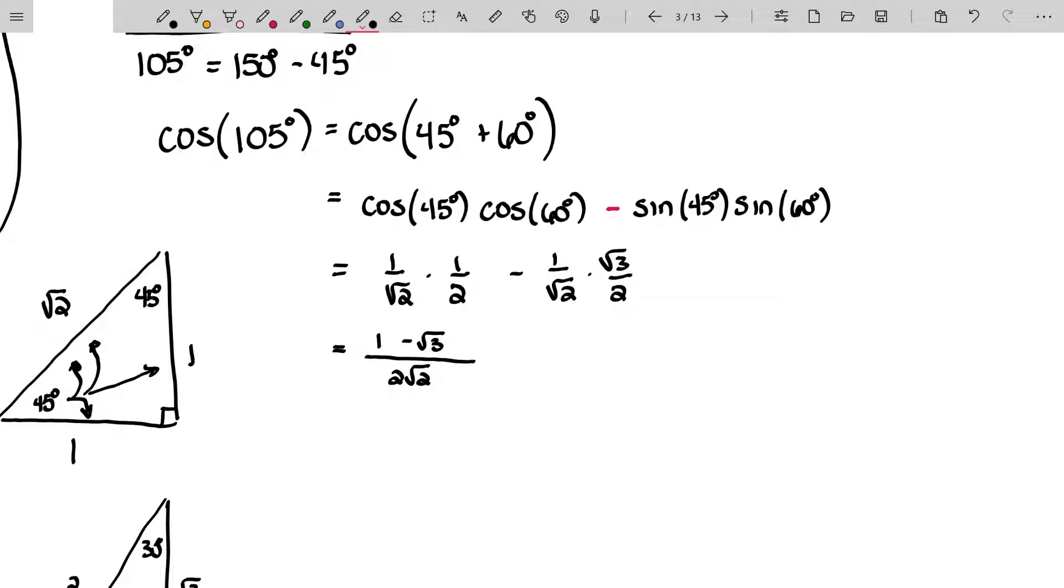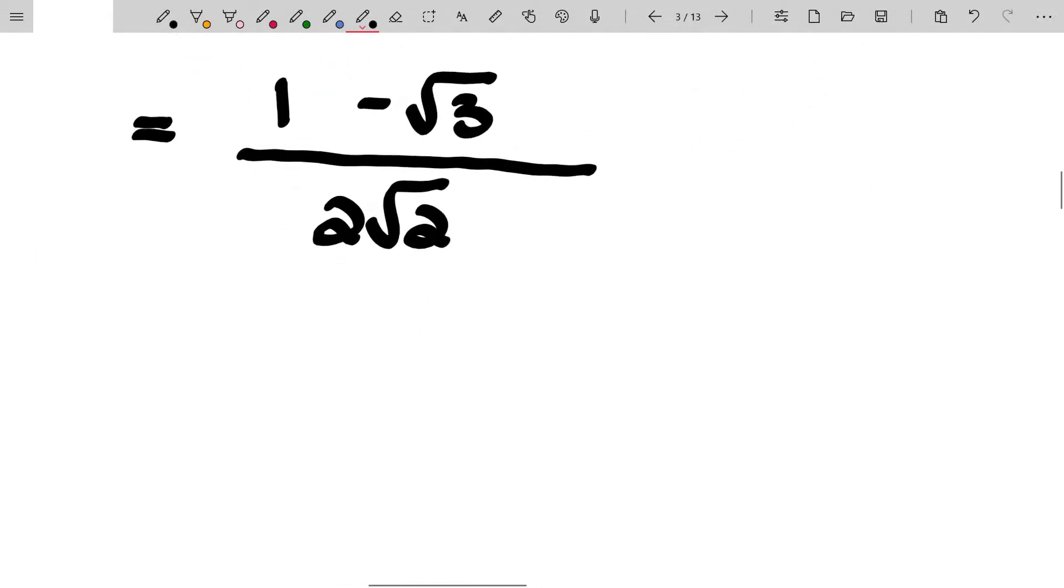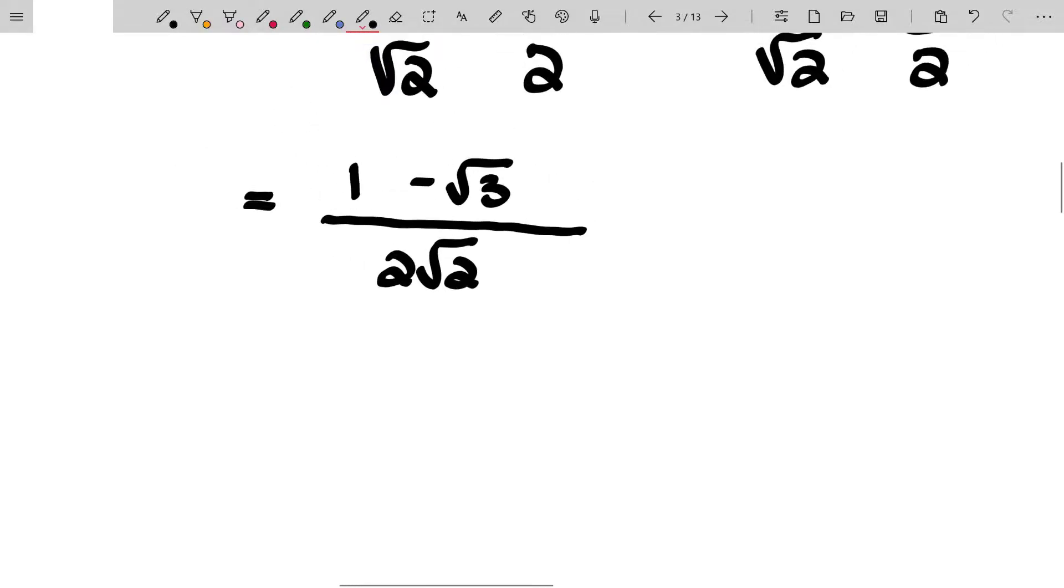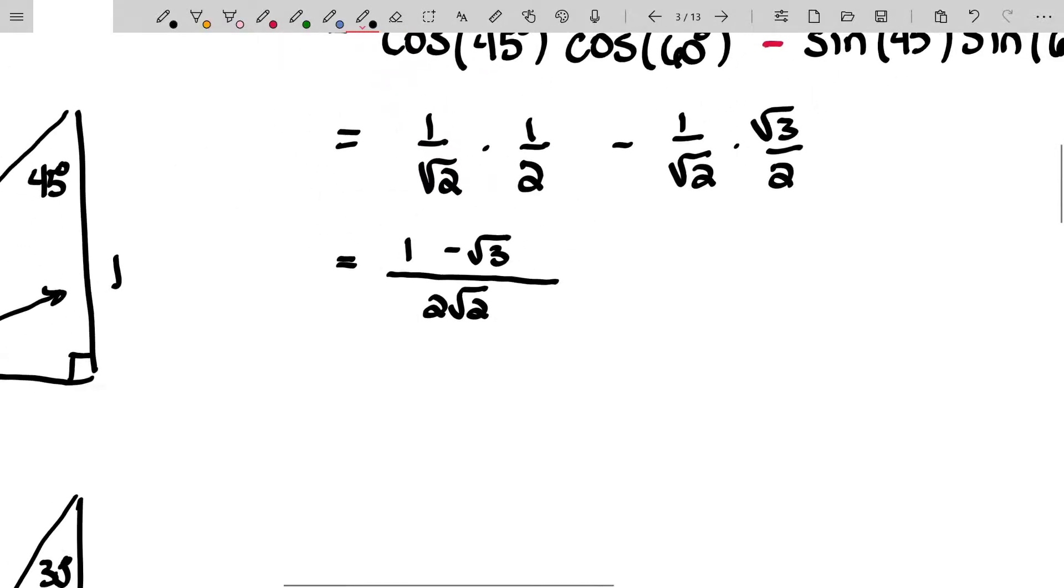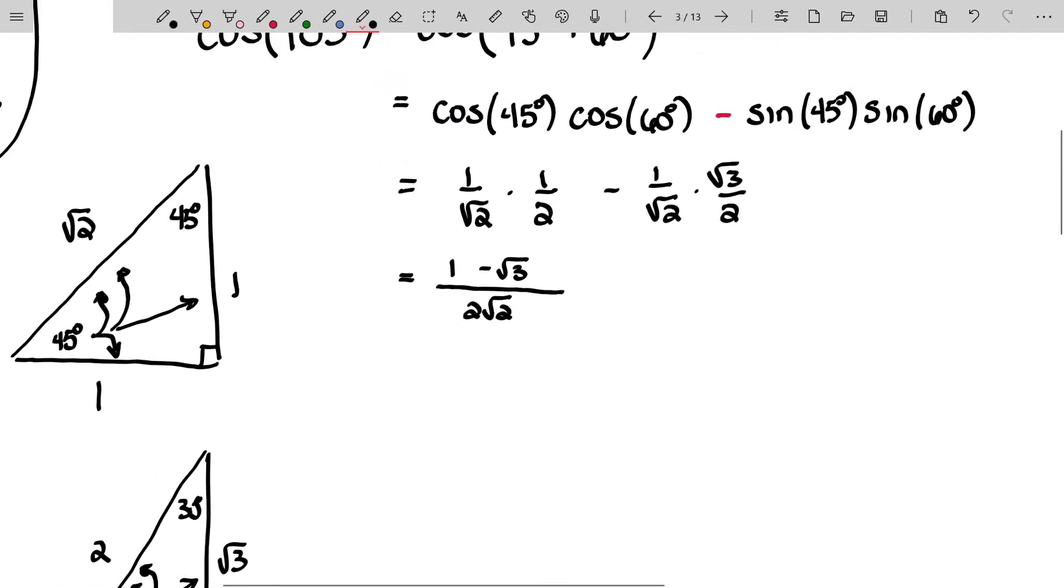Now, again, I should mention here, some people have instructors that will force them to rationalize denominators. I am not one of those instructors when your denominator is just a simple single term, which this is a single term. There's no need to rationalize that denominator. In fact, if you did, it would just get uglier. So there's no point in doing it here. All right. So that's how you figure out the trig function of a non-special angle, if it can be written in terms of special angles.